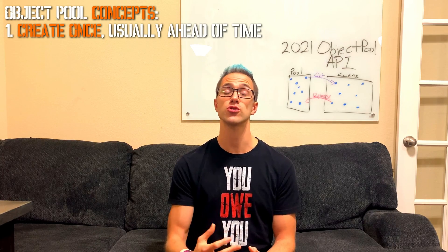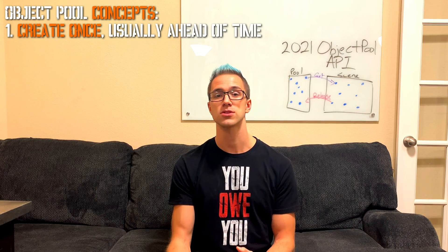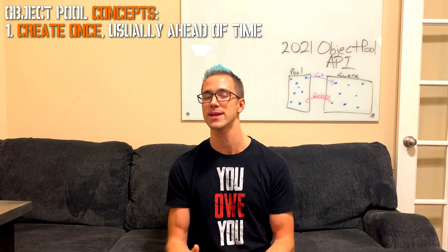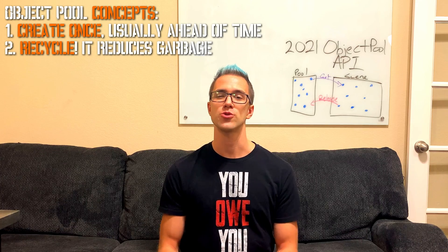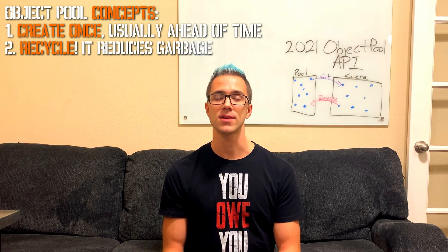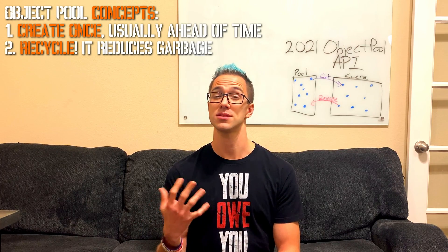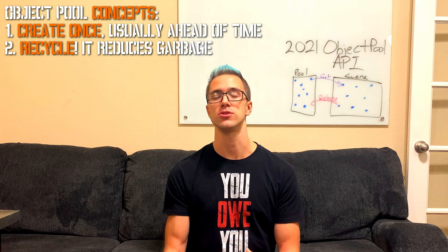So an object pool — the whole concept of it is that you want to pre-create the objects that you're going to repeatedly use in your scene, so that way you don't have this instantiation overhead. Creating game objects in object-oriented programming is relatively expensive to do, and so is destroying them. So what we can do instead is create a bunch of them up front and then recycle them — just disable and re-enable them whenever we want to use or get rid of them, so we don't have to destroy and recreate them every time.